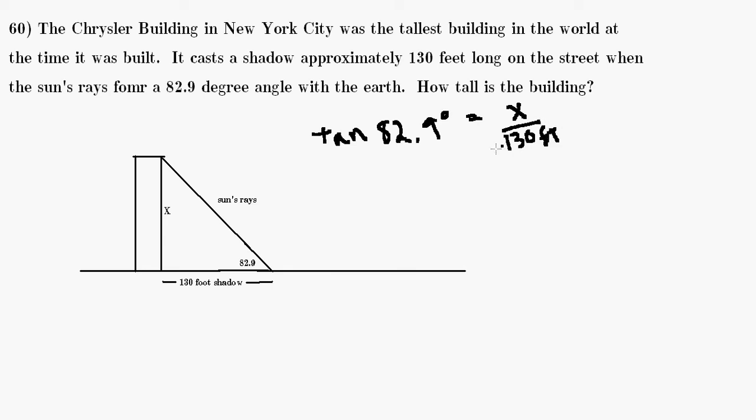And all we'd have to do is multiply both sides of the equation by 130. So now we have 130 times the tangent of 82.9, and that's going to be equal to x.